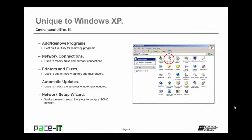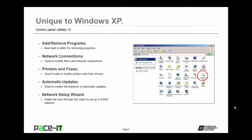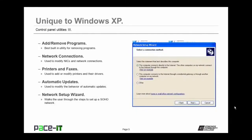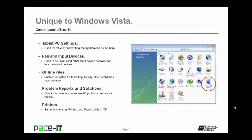The Network Connections utility is used to modify how network interface cards behave and network connections. The Printers and Faxes utility is used to add or modify printers and their drivers. Then there's the Automatic Updates utility, used to modify the behavior of automatic updates. The final utility unique to Windows XP is the Network Setup Wizard, which walks the user through the steps to set up a small office/home office network.